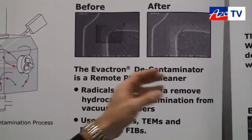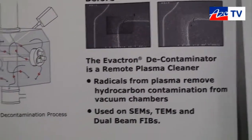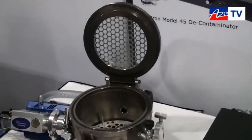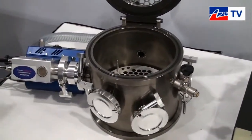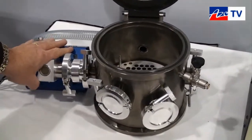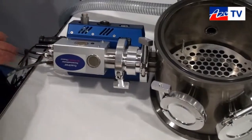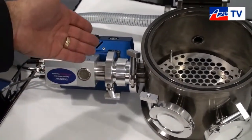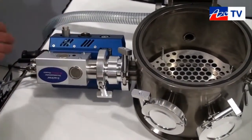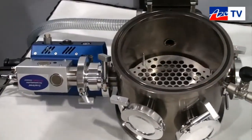That's a before and after picture of a real-world sample. We have over 1,300 of our plasma radical sources installed around the world on a number of different electron microscopes. This is the actual plasma radical source. The gas that we use is most commonly air, so we're using the oxygen radicals in the air to do the actual work. The plasma stays inside here and the gas molecules move into the chamber.